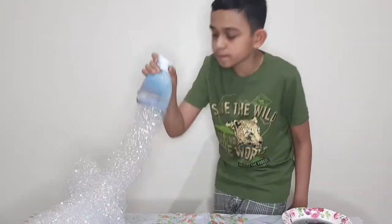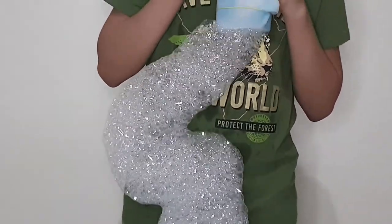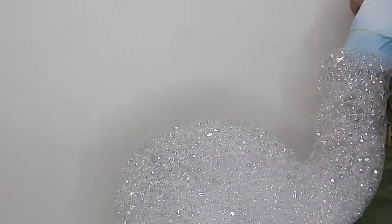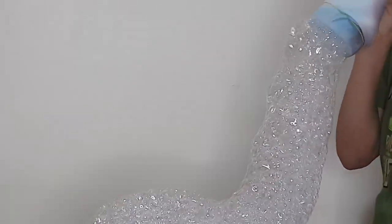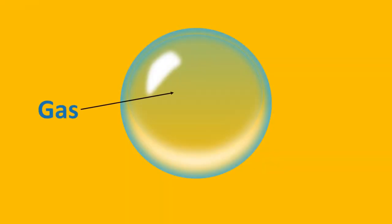Anyways, I got really long bubble snakes — that was so fun! Now, how are these bubbles formed? When we blow air into the bottle, the gas molecules in the air get trapped by the liquid soap on the sock and form bubbles. A bubble is a globule of some volume of gases enclosed by a liquid.